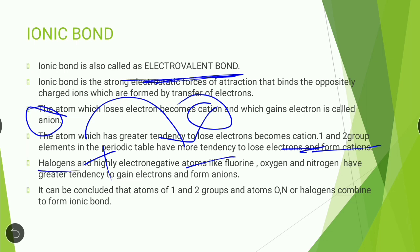Halogens are group 7 elements and have 7 electrons in their outermost shell. For example, chlorine (2,8,7) can either lose 7 electrons or gain 1 electron to become stable — it is easier to gain 1 electron. So halogens and electronegative atoms like fluorine, oxygen, and nitrogen have a greater tendency to gain electrons and form anions.